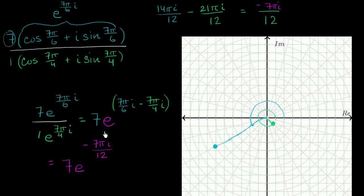Now let's plot this. Each of these quadrants is split into six equal angles, and each quadrant is pi over two, so each of these small sub-angles are pi over 12. We need to go negative seven pi over 12, meaning we go in the negative — clockwise — direction.